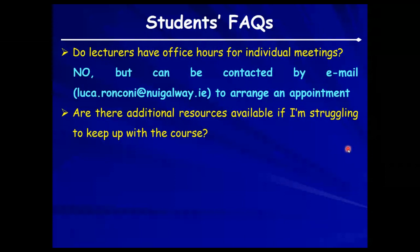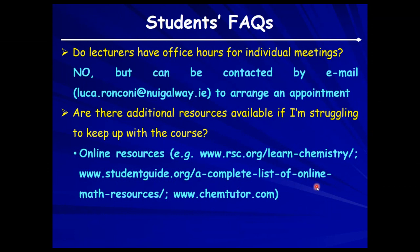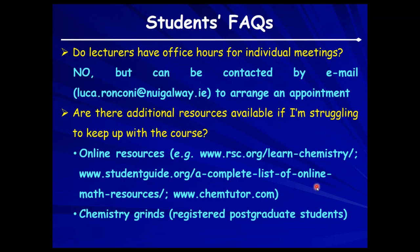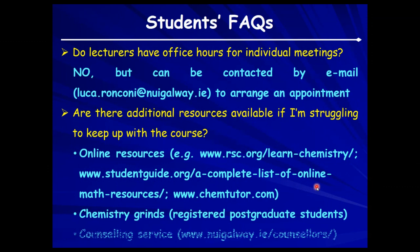University chemistry is more difficult than at high school and you might at some point struggle to keep up with the course. Remember there are additional online resources, and we also have postgraduate students registered to give chemistry grants. If you are really struggling for personal reasons rather than chemistry itself, remember that there is always the counseling service of the university.